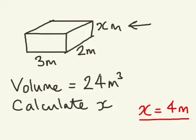You should have found that x was equal to 4 meters, because 3 multiplied by 2 is 6. So I need to work out what I need to multiply 6 by to get 24. 6 multiplied by 4 is 24, so x must be 4 meters.